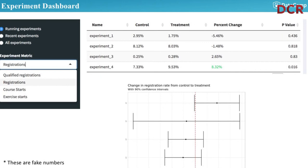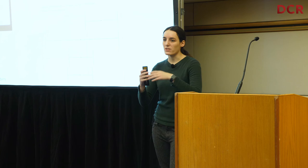I also built dashboards for monitoring experiments. You can choose to see running experiments, recent experiments, etc. Then you look at experiment metrics: registrations, course starts, exercise starts. For each experiment you see the rate in control and treatment, percentage change, and p-value — with the display changing colors based on the p-value. We also add confidence intervals. Even if you don't have strong statistical skills, you can grasp an intuition: if the confidence interval is very far from zero and small, maybe it's a real change; if it's just barely not overlapping, maybe be more skeptical.